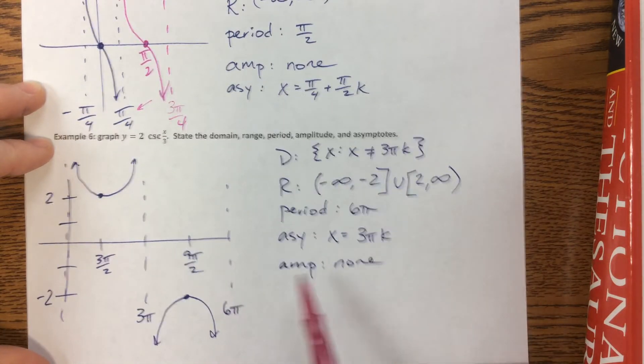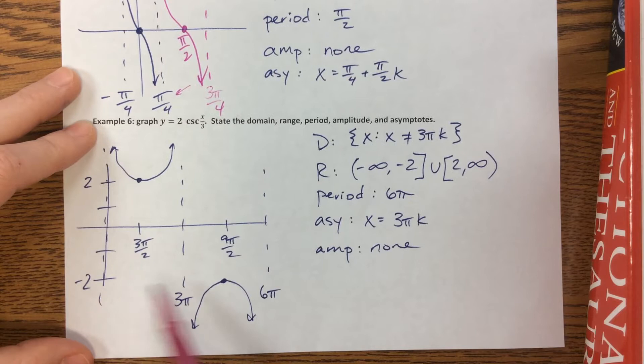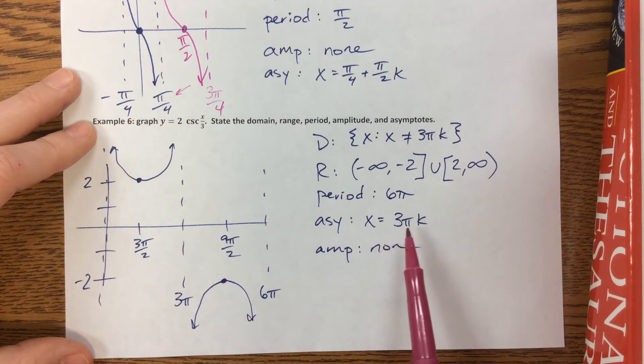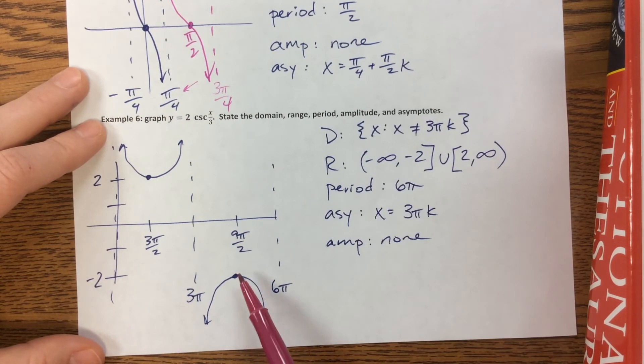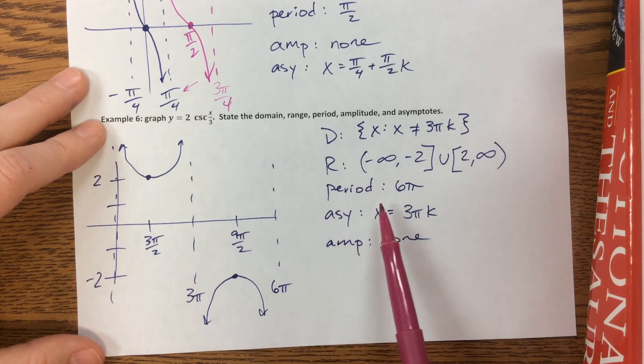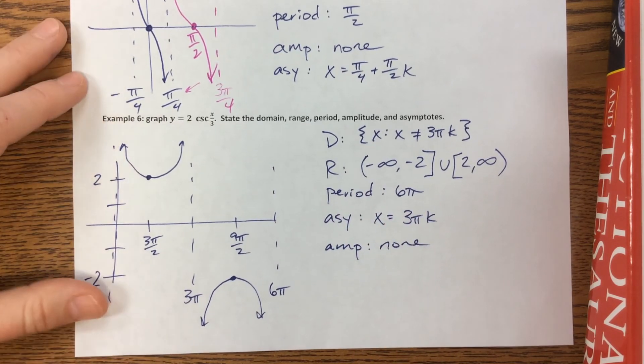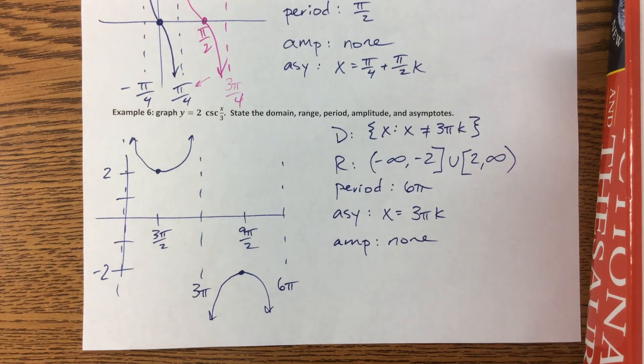So the asymptotes, these are how far apart? Well, they happen to be 3π apart. And we can just say 3πk, because here we plug in k equals 0. Here's k equals 1, k equals 2. And that's how we get our asymptotes. It's x equals 3πk. Therefore, it's the set x such that x is not equal to 3πk. The range, negative infinity to 2, mind the gap, 2 to infinity. The period we already said was 6π, and it has no amplitude. Okay, I hope that's helpful. We are going to definitely do some harder ones soon, but hopefully that gets you going.